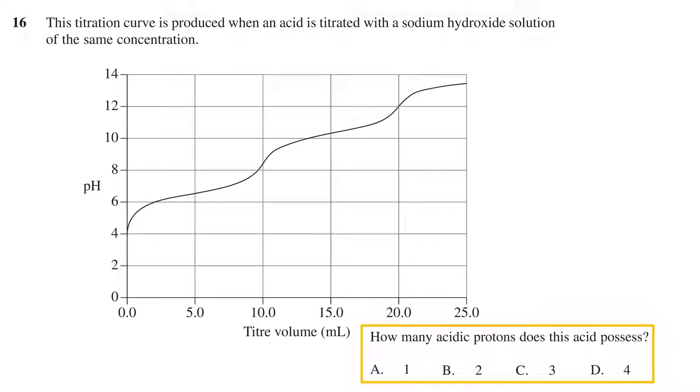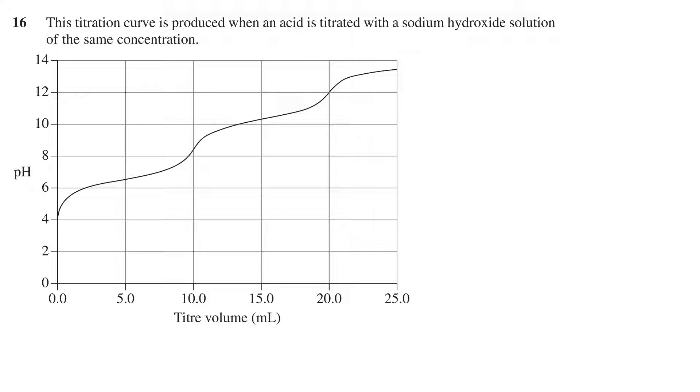Followed by numbers 1 through 4 as options A through D. We are asked to determine what kind of acid we have based only on its titration curve against the same concentration of sodium hydroxide.